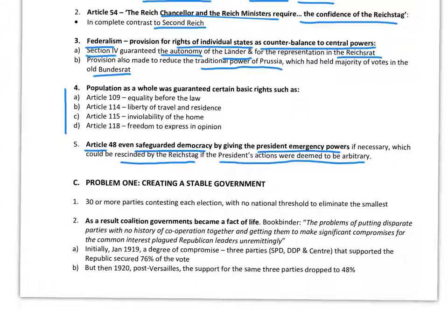Moving into the third part of the essay — the problems, the reality. Lee identifies four key problems. The first was the difficulty of creating a stable government. There were 30 or more parties contesting each election, and there was no provision within the Constitution to eliminate the smallest parties. Because it was so fair, if a party had 5% of the vote, they had 5% of the seats, meaning the Reichstag was packed with many political parties.